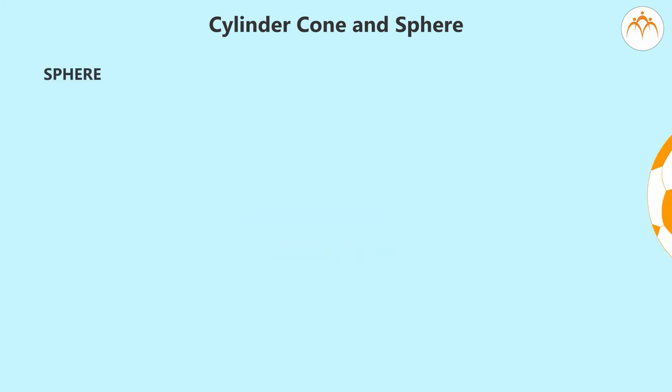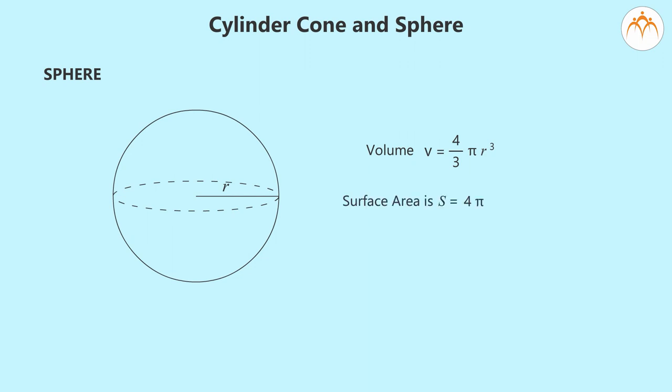A ball or a ladoo are spherical shapes. Ball bearings in an automobile are also spherical. The formula for the surface area and volume of the sphere is: for a sphere with radius r, volume equals (4/3)πr³, and surface area equals 4πr².